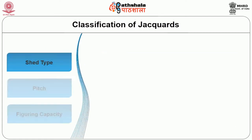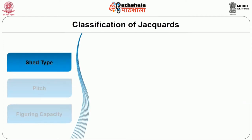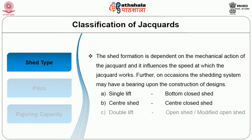Jacquards are further classified based upon the type of shed they form, the pitch of the jacquard, and the figuring capacity of each machine. Based upon the shed type, the shed formation is dependent on the mechanical action of the jacquard and it influences the speed at which the jacquard works. On occasions, the shedding system may also have a bearing upon the construction of the design. A single lift jacquard generally forms a bottom closed shed, a center closed shed is formed by a center shed, and a double lift jacquard generally forms an open or a modified open shed.